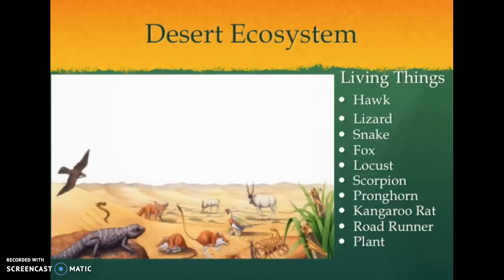The living things we found here are a hawk, lizard, snake, fox, a locust — they look like grasshoppers — scorpion, pronghorn, kangaroo rat, roadrunner, and of course a desert plant.